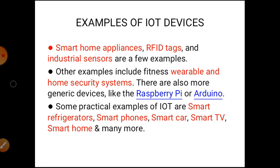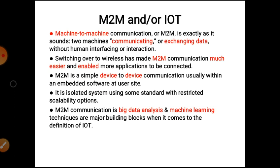Other examples include fitness wearables and home security systems. Some practical examples we can consider are the smart refrigerator, smartphone, smart car, smart TV, and smart home, and many more. These are examples of IoT devices.